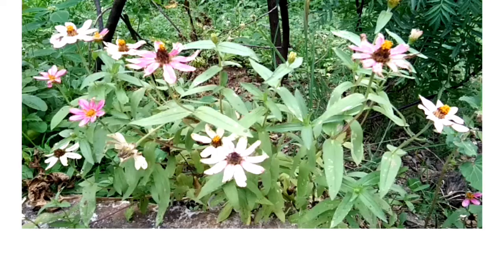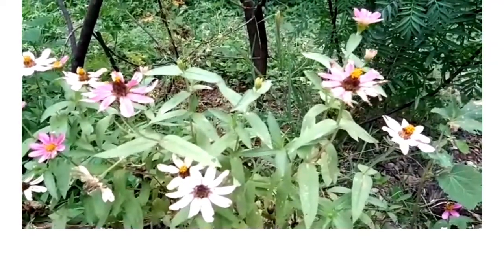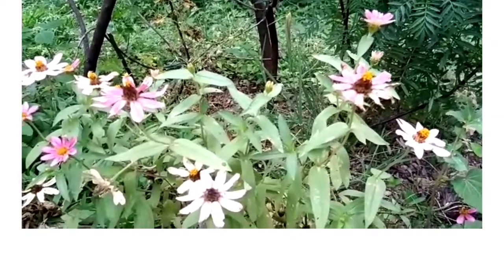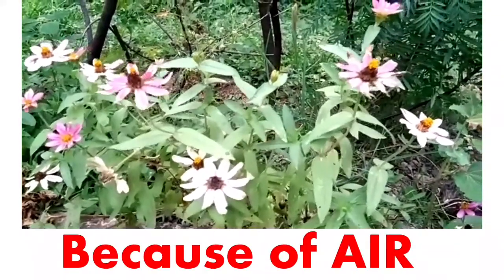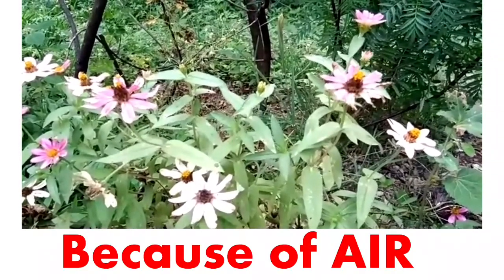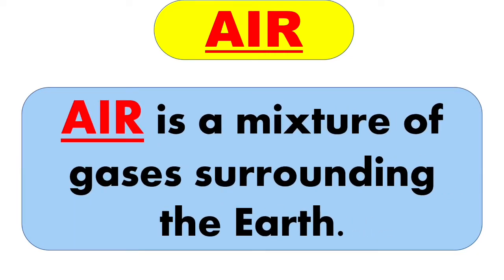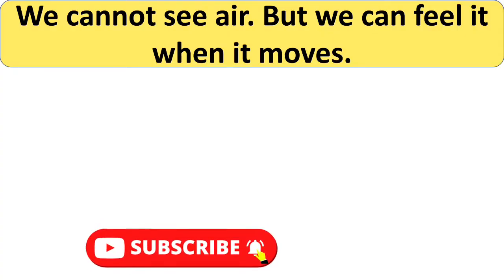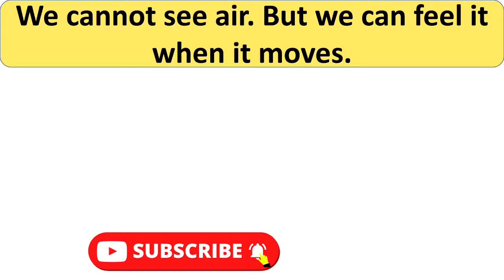First of all, see here — the leaves of the plant are trembling or moving. How is it happening? Yes, it is because of AIR, which is all around us. What is AIR? AIR is a mixture of gases surrounding the earth. Dear children, can you see AIR around yourself? No, we cannot see AIR.